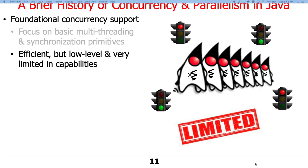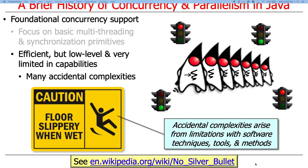That's Java 1.0 in a nutshell — as you can see, there really isn't very much there. The focus was on efficiency: these mechanisms are thin wrappers around what's provided at the operating system level underlying the Java virtual machine. However, they are low-level mechanisms that are somewhat tedious and error-prone to program, and they're very limited in what you can do. There was stuff there, but it wasn't very powerful.